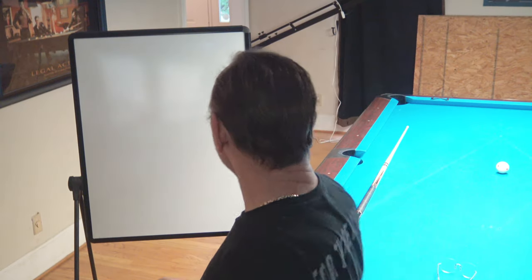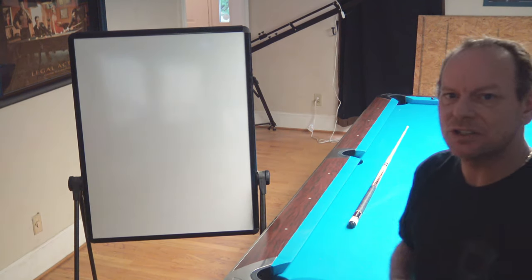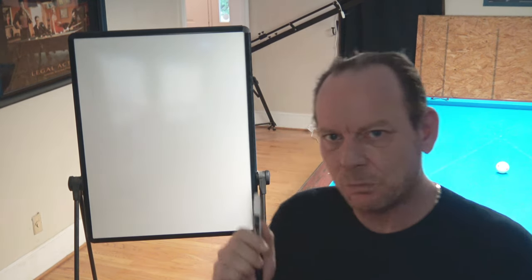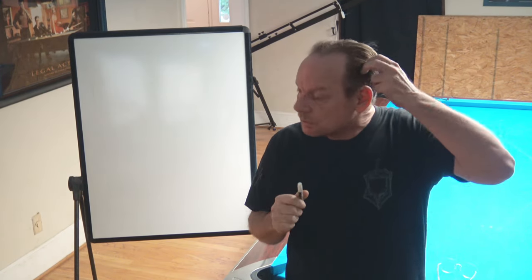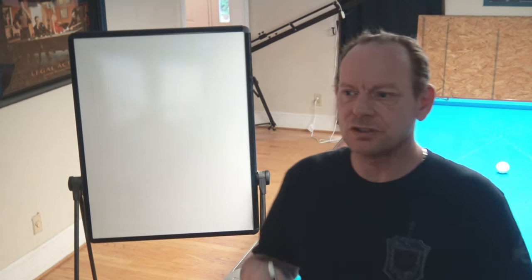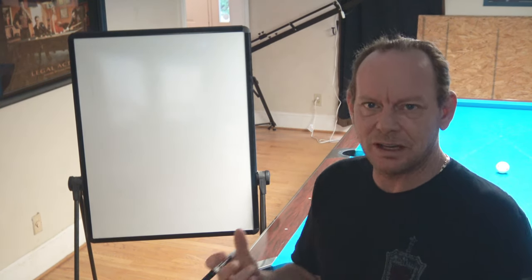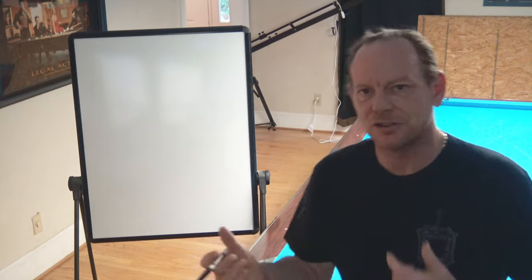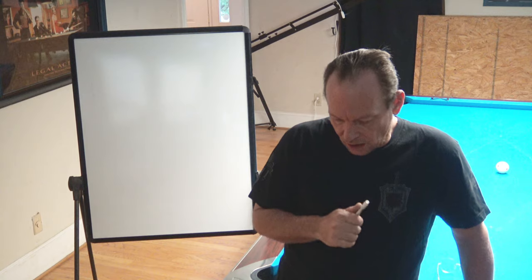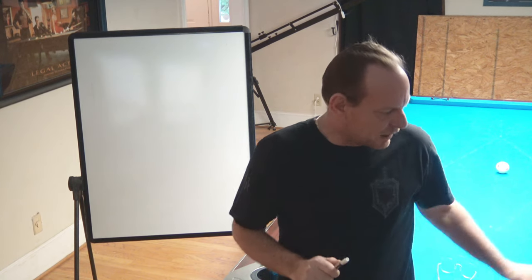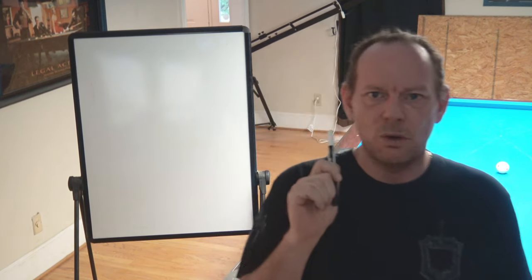Hello YouTube! Today we're going to start a new series — a key concept series. We're going to talk about some things that will help you understand what's happening on the table, and will set us up for analysis where we'll take shots that commonly come up in runs and talk about the options, what you can do, and the different paths. But in order to do that, there are a lot of things to go over. Today we're going to talk about the rails and how they work.